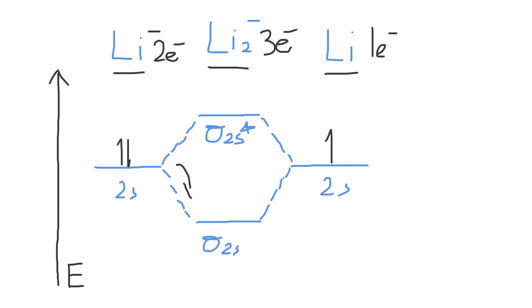Then, according to the Aufbau principle, we'll fill up our molecular orbitals with the lowest energy molecular orbital first. We'll put two electrons here to fill it up completely, and then put the remaining one electron in our antibonding molecular orbital.